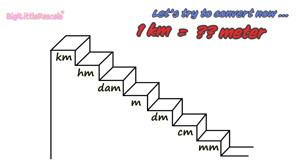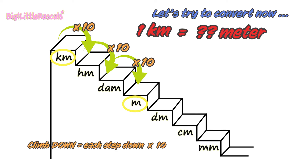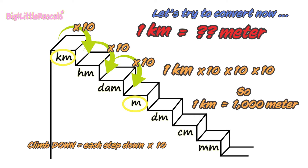1 kilometer equals how many meters? First, find where kilometer is on the stair, then find the meter. You need to jump down from kilometer to meter. Each step you jump down, multiply by 10. That's 1, 2, and 3 jumps.